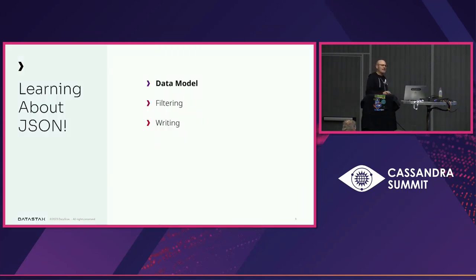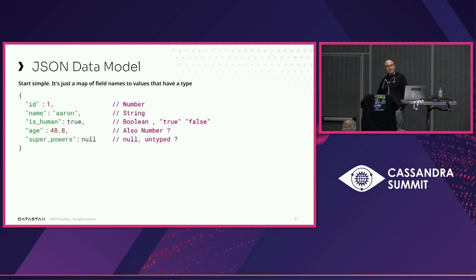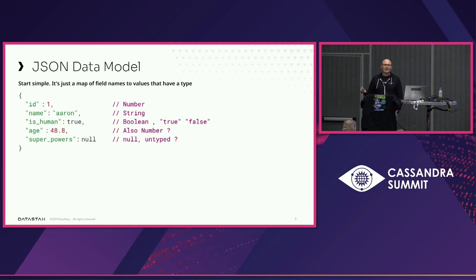Into the data model — learning about JSON. It looks pretty simple: you've got a map, names, values, and types like number and string. But there's only one number type, so 1 and 48.8 are the same data type, which is a bit odd. There's also null, but it's untyped — kind of like a Python null.